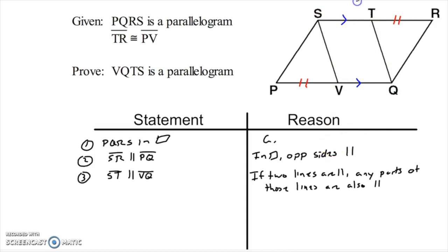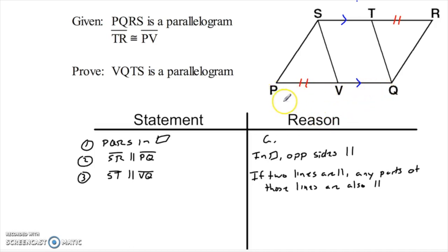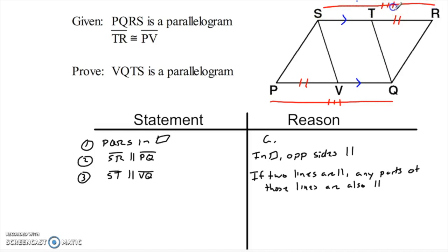At this point I've got two options: I can either prove that SV is parallel to TQ, or I could prove that ST is congruent to VQ — go for both pairs of opposite sides parallel, or go for one pair that is both parallel and congruent. I've got the other given about PV being congruent to TR, so that's pushing me toward doing a subtraction. Since the large shape is a parallelogram, don't we know this entire side is congruent to that entire side? If I take away the two-tick pieces from the bigger three-tick pieces, I'll end up with ST congruent to VQ.